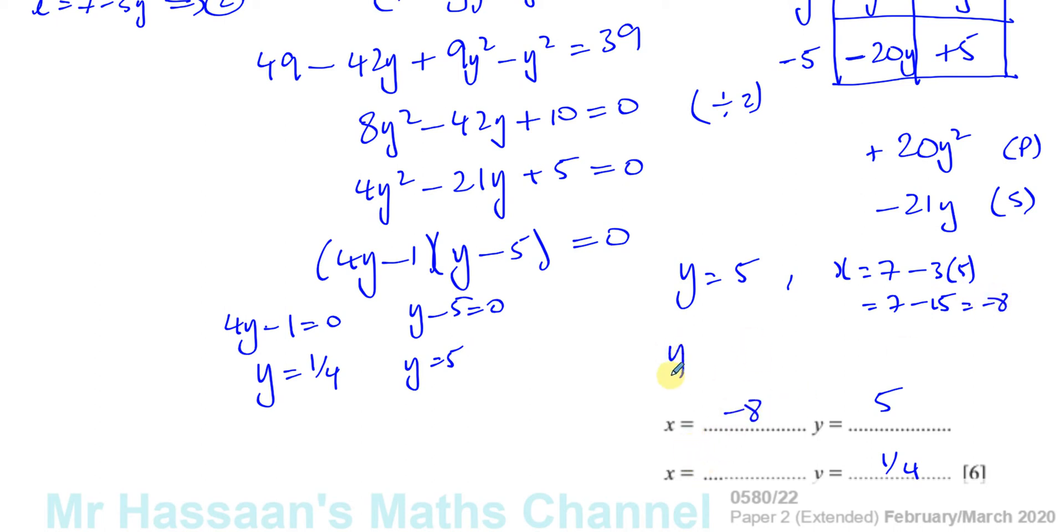And when Y equals 1 quarter, X is equal to 7 minus 3 times a quarter, which is 7 minus 3 quarters, which is going to give us, that's 28 over 4 minus 3 over 4, which is 25 over 4. So that's 25 over 4, which you can write as 6 and 1 quarter if you want. So there we have the answers to this question.